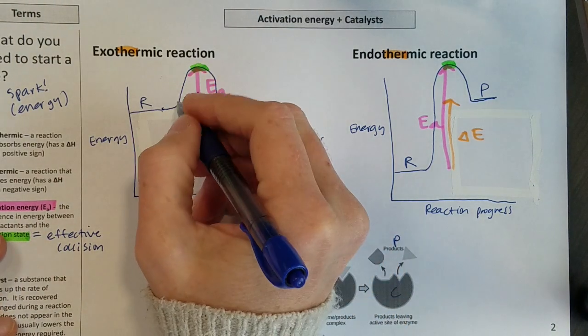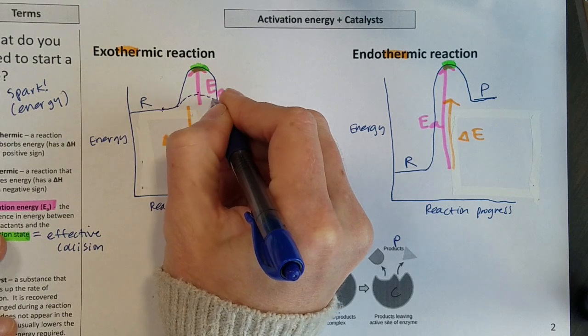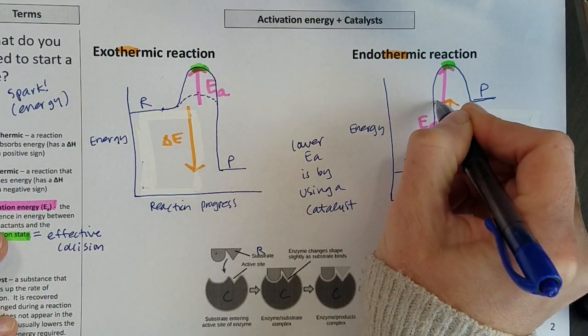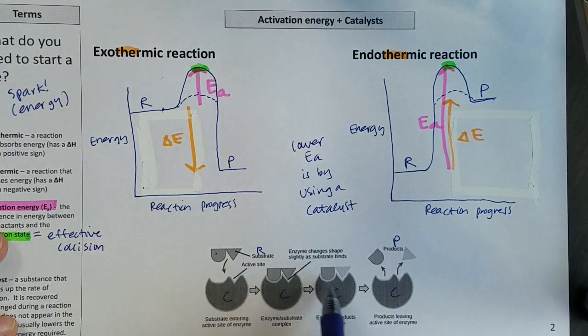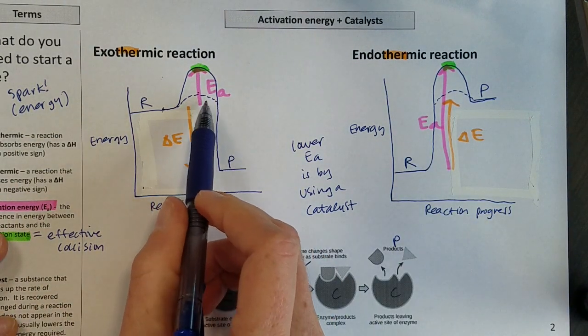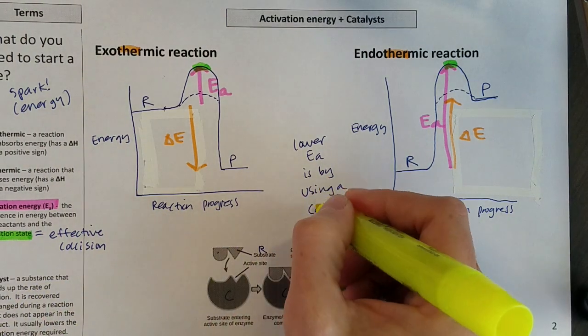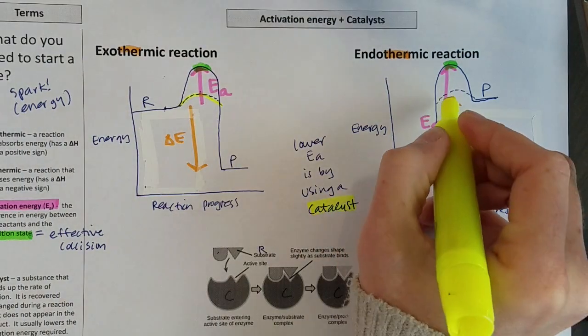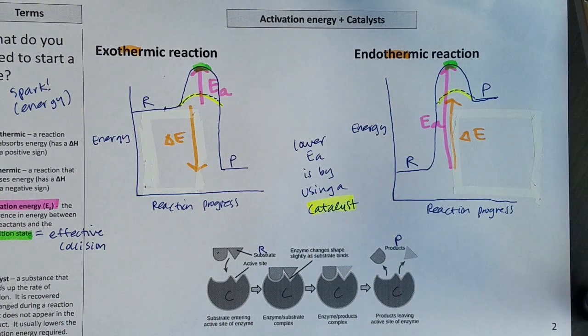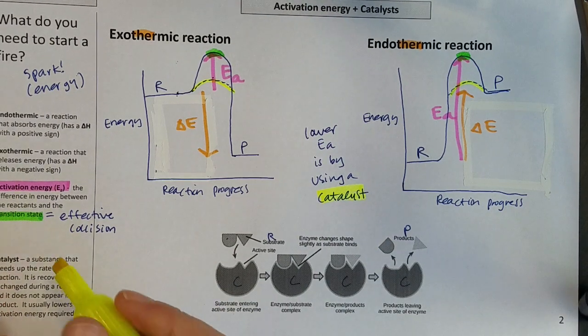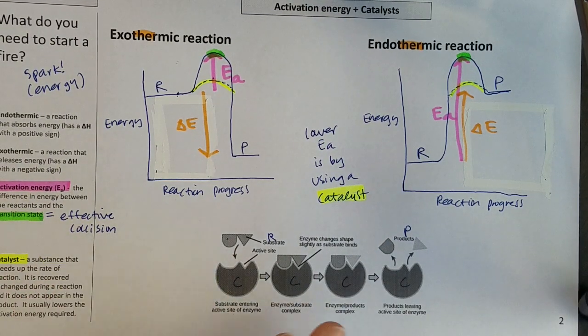And so what that looks like on my energy diagram is I get an alternate pathway where I still start at reactants, and I still have to go up a hill. It still takes energy to do the reaction here and here, but it's a little bit easier reaction. And so the catalyst ends up giving me this lower activation energy and a lower energy pathway to get from one place to another. And you've got a definition of a catalyst over here on the side.